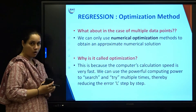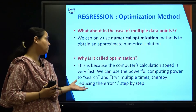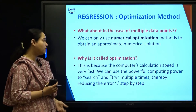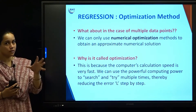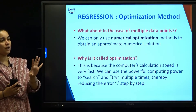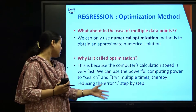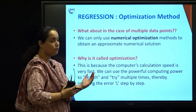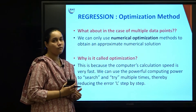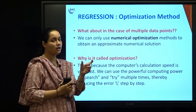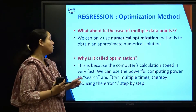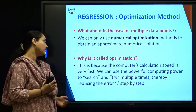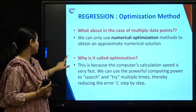We call it optimization because the computer's calculation speed is very fast, and we can use this computing power to search and try multiple values multiple times, thereby reducing the error L. We want to reduce the mean square error L value — that is why we used argmin. We want to minimize the value of L step by step, and thus the process is called an optimization process.